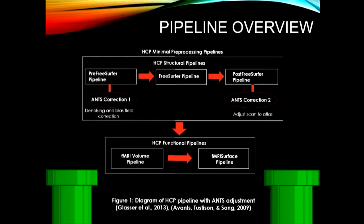The second portion is ANTS correction 2. The purpose of this part of the algorithm is to adjust the scan better to the atlas — making sure it aligns properly. Because it aligns better, we make sure all the parts of the brain that are supposed to be there are going to be there, which will result in more accurate, higher quality scans.